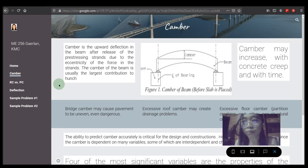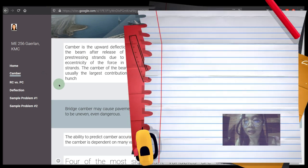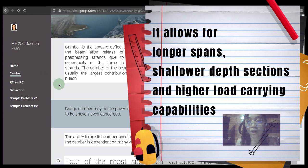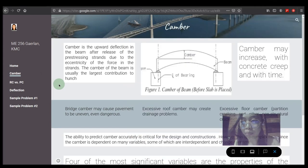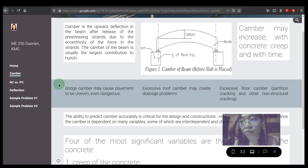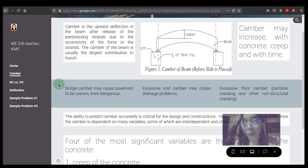The benefit of camber in prestressed, especially on precast concrete products, is that it allows for longer spans, shallower depth sections, and higher load-carrying capabilities than conventional building materials. However, cambering has also limits.